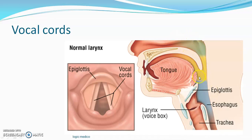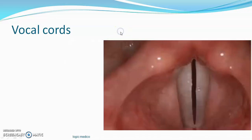The nasal cavity, paranasal air sinuses, pharynx, and oral cavity all act as resonators. They resonate the voice; without them, speech would be abrupt and without resonance. When you close your nostrils or have a cold, the other person can tell because there is no resonance in the voice. The soft palate, tongue, teeth, and lips are called articulators — they help in articulating words.